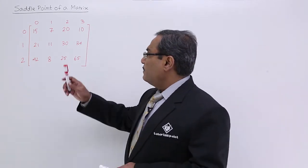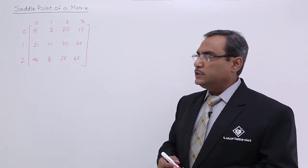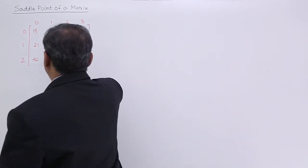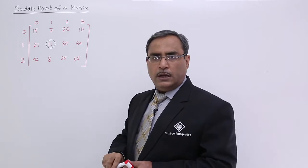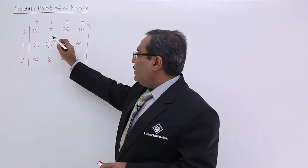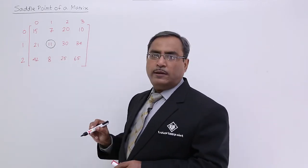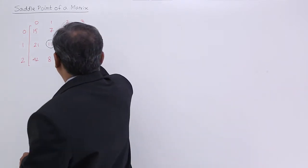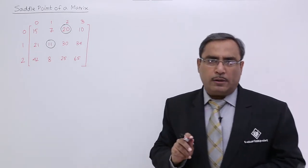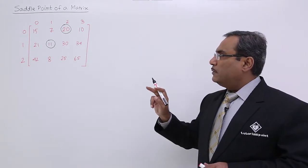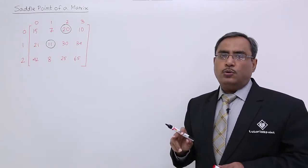Now see this matrix. Consider number 11 — this number is row-wise minimum at row number 1, and it is also maximum across that column. So 11 is a saddle point number. If you consider number 20, then 20 is maximum across row number 1 and it is minimum across column number 2. So 20 is also a saddle point.